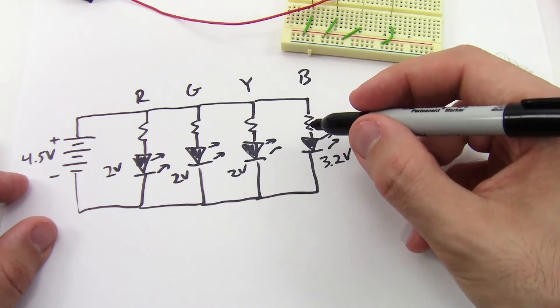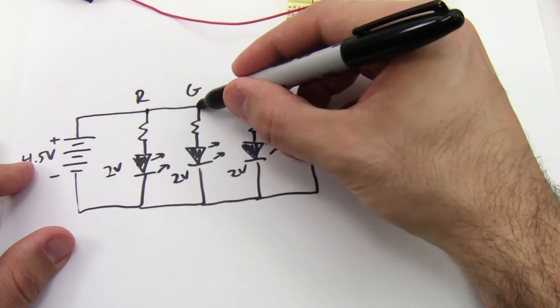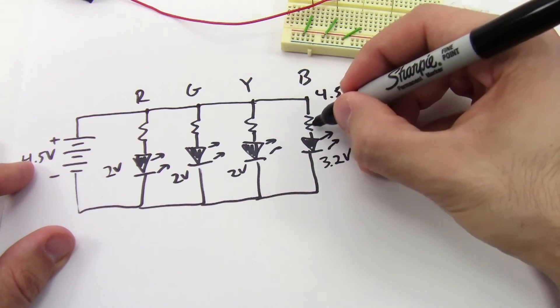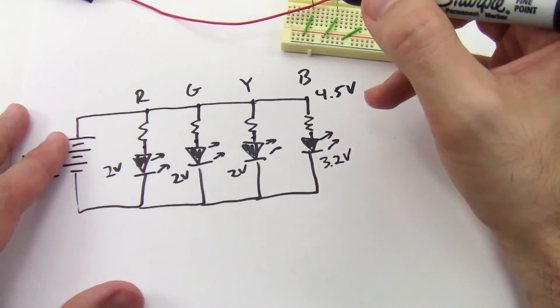So I just do the calculation for each resistor individually because the voltage at each of these points at the top of the circuit is all the same. That's going to be 4.5 volts, and then the voltage on the other end of each resistor is going to be determined by the respective LED.